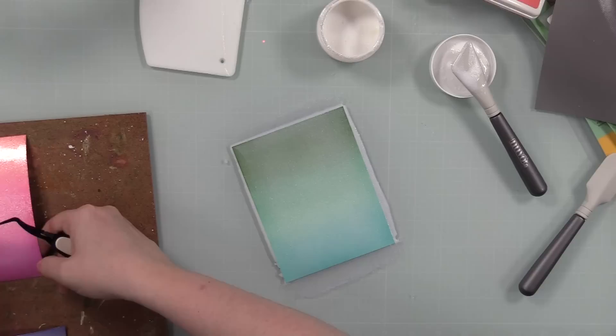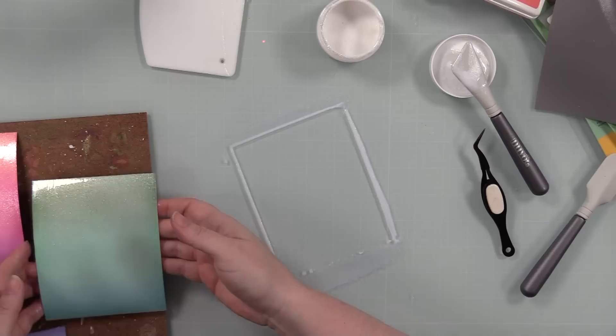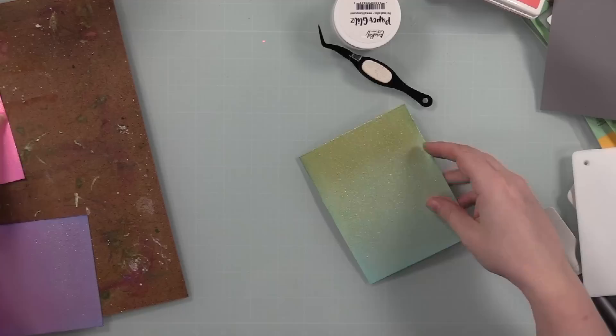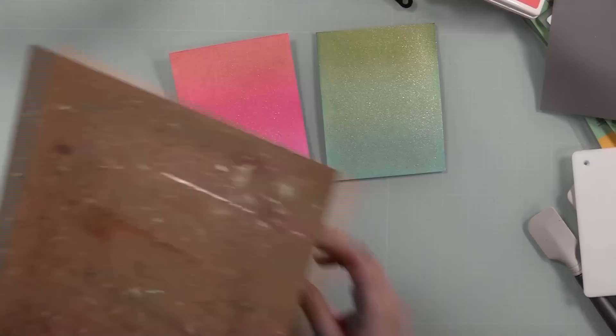Once that one's done, I just take all that excess, scrape it back into the container. I've just been putting these on a hardboard and then I set them aside to dry. Once I set those backgrounds aside, I immediately wash off my palette knives. I scrape off my work surface. This stuff cleaned up pretty easily, but you always want to just clean it up quickly. Then I let them dry.